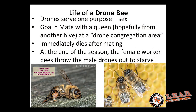Drones serve one purpose: to have sex with a female from another hive, propagating the genetics of their hive. Only about 1% of the hive are drones. If a drone mates, he immediately dies. If he never mates, at the end of the season when fall comes, the female worker bees literally drag the males out of the hive and let them starve to death — because they're bigger, eat more honey, and no longer serve a purpose through winter.